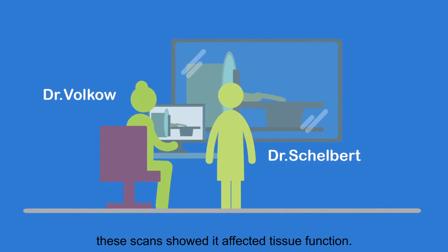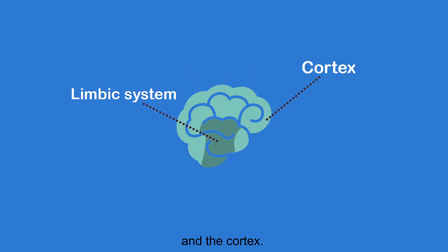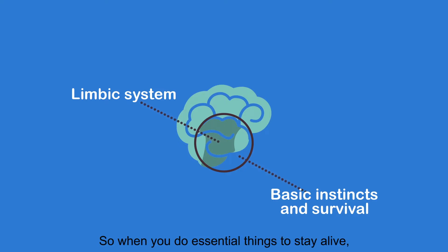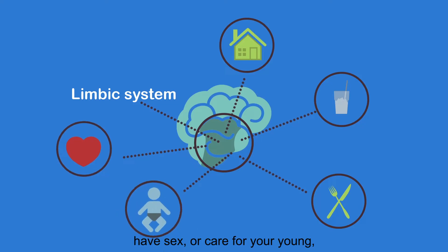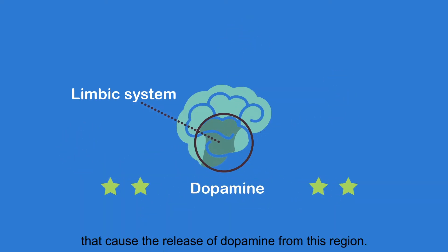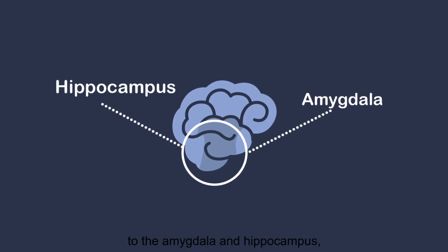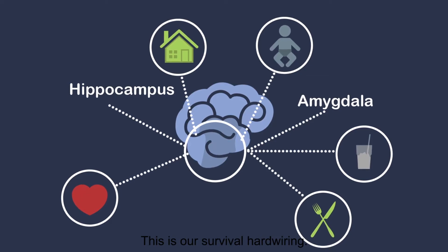Like other diseases, these scans showed it affected tissue function. There are two main parts of the brain affected by drug use: the limbic system and the cortex. The limbic system, located deep within the brain, is responsible for our basic survival instincts. So when you do essential things to stay alive — like eat, drink, find shelter, have sex, or care for your young — your brain reinforces behaviors that cause the release of dopamine from this region. That reward for surviving is also transmitted to the amygdala and hippocampus, which records a memory of that feeling, so we seek it again. This is our survival hardwiring.